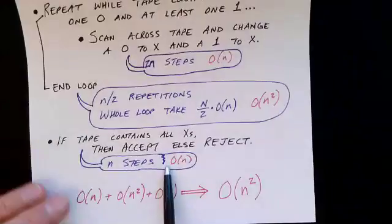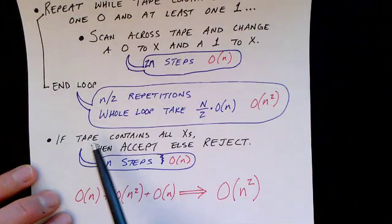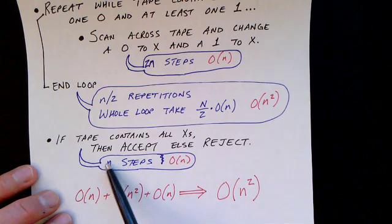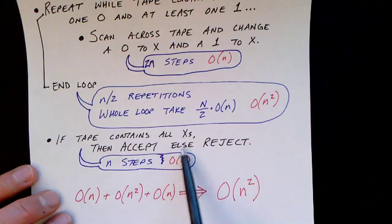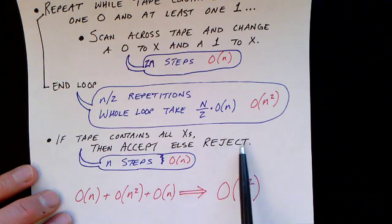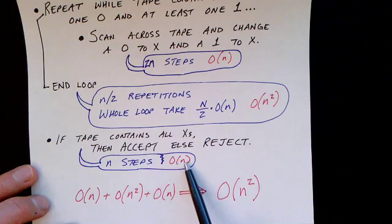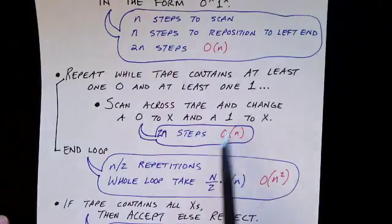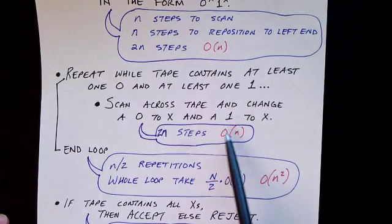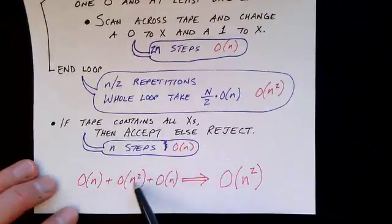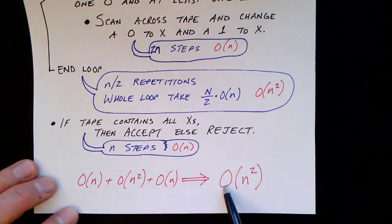The last step of the algorithm is to verify that we've crossed off all the zeros and all the ones, so we make one more pass across the tape all the way to N to make sure no ones remain. This takes N steps, so it's an order N operation. When we combine these — order N, then order N squared, then order N — the N squared term dominates, so this algorithm runs in order N squared time.